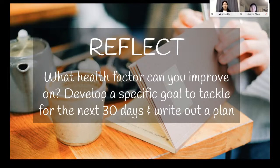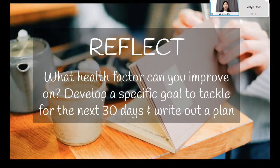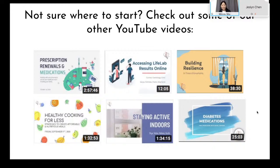For a reflection point: what health factors do you feel you can improve on? Take a moment to pause, develop a specific goal using the SMART format, on what you want to tackle for the next 30 days, and write out a comprehensive plan. If you're not sure where to start, we have many resources on our YouTube channel — check out the timestamps and see if there's anything that piques your interest and could be helpful.